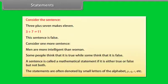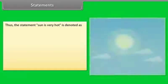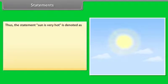The statements are often denoted by small letters of the alphabet: P, Q, R, etc. Thus, the statement 'sun is very hot' is denoted as P: sun is very hot.